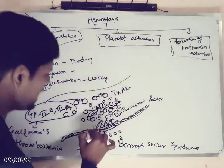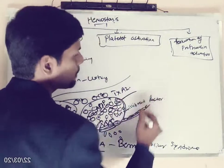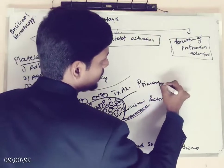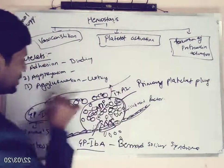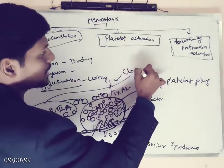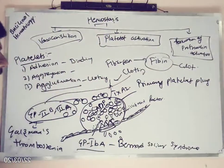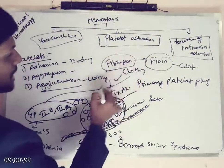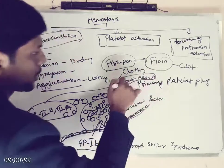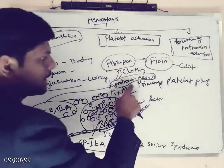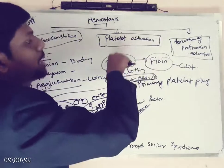Platelets aggregated here and they will form a temporary plug. This temporary plug will prevent bleeding temporarily and is called the primary platelet plug. After this, platelets will start agglutination — utilizing all the clotting factors, they will convert fibrinogen into fibrin, and this fibrin will ultimately clot the blood. Conversion of fibrinogen needs an activator called prothrombin activator. Prothrombin activator in turn converts fibrinogen to fibrin, so platelets synthesize this prothrombin activator.